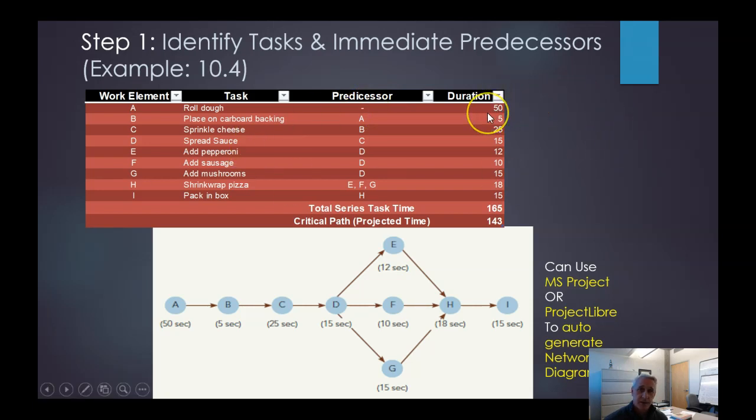Then we also have some estimated durations. How long does it take? So here we've got 50 seconds. All these durations are in seconds, by the way. Place cardboard backing, five seconds. It has to come after that. So if you notice, B has A as a predecessor. It requires A for it to be done. And likewise, C requires B to be done. D requires C to be done.